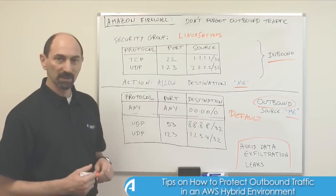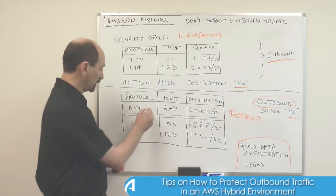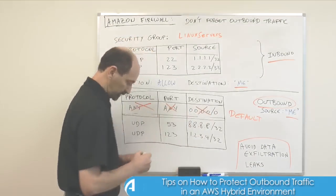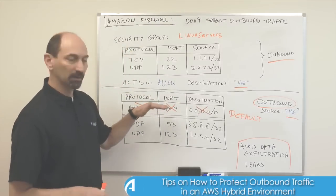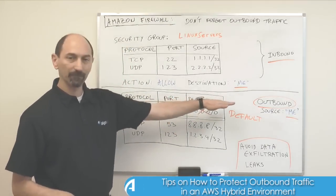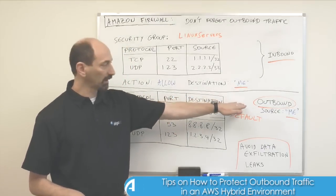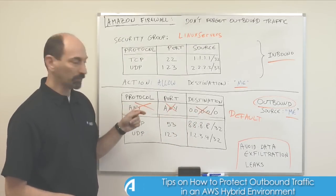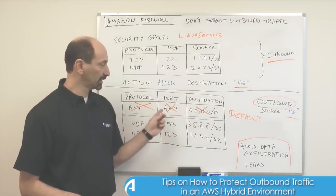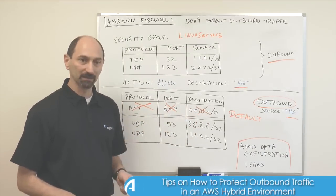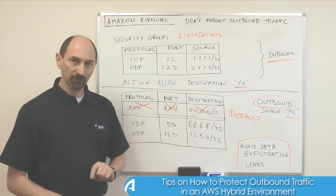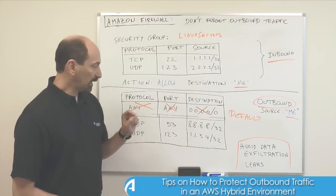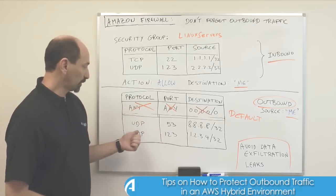You get a rule that says any protocol with any port to any destination is allowed. This is of course a very insecure rule that you don't want to have. So I recommend looking into your security groups, editing them, looking at the outbound tab, and checking that you do not have such a rule. If you do, it's probably a wise idea to delete it.